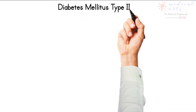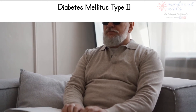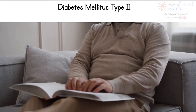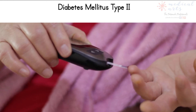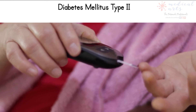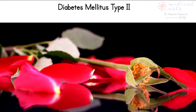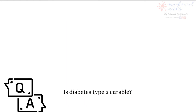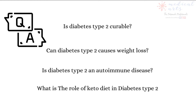Diabetes type 2 is the leading cause of new onset of blindness and renal failure. Ten percent of the general population have diabetes. Understanding this illness and detecting it in the early stages of development is necessary to prevent premature death and maintain a good quality of life. This video will be an overview of diabetes mellitus type 2.